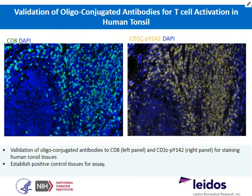Our next step was staining tissue and establishing positive control tissues for our assay. We decided to use human tonsil as a positive tissue control, mainly because it's usually filled with activated T cells, as most tonsils removed are due to tonsillitis. It's also a very easy source for obtaining positive control tissues. Shown here is an example of a tonsil — you can see CD8 staining around the germinal centers as expected, stained with our oligo-conjugated antibody. In the panel to the right, you can see staining with CD3-zeta 142.